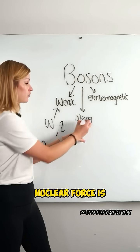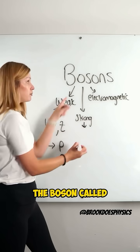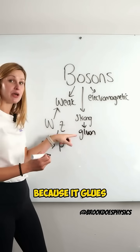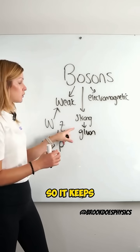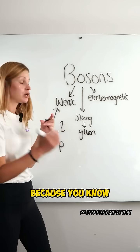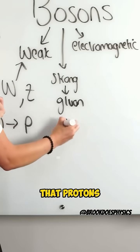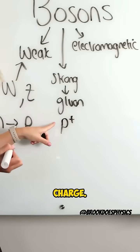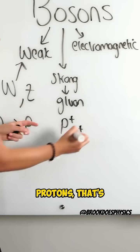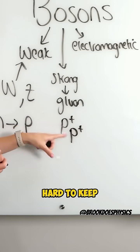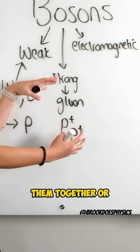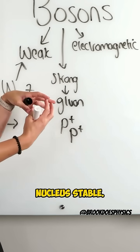The strong nuclear force involves the boson called the gluon. It's called that because it glues the nucleus together, keeping all those protons together. Protons have a positive charge, so inside a nucleus with lots of protons, it's really hard to keep them together. The strong nuclear force glues and binds them together to keep the nucleus stable.